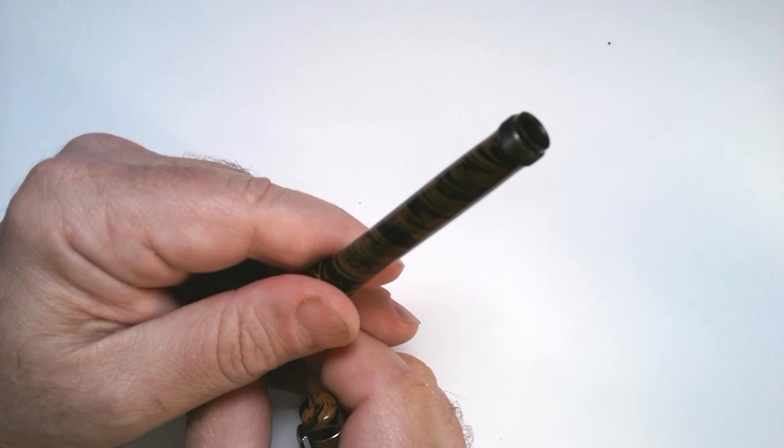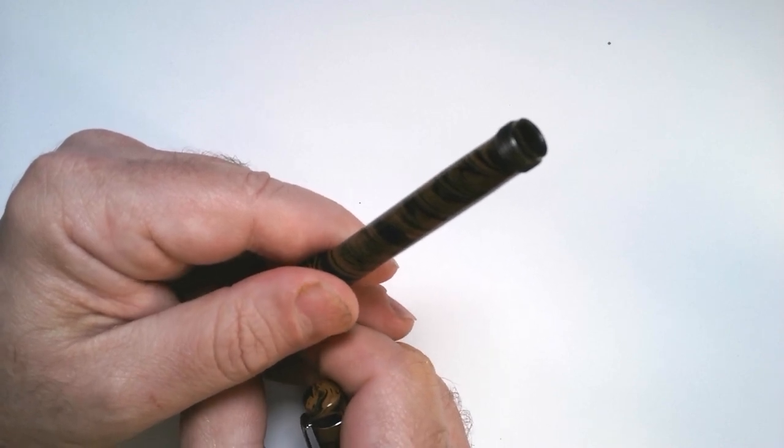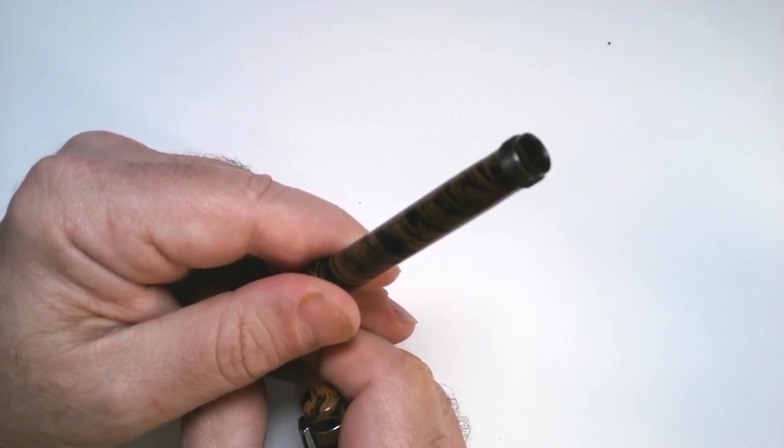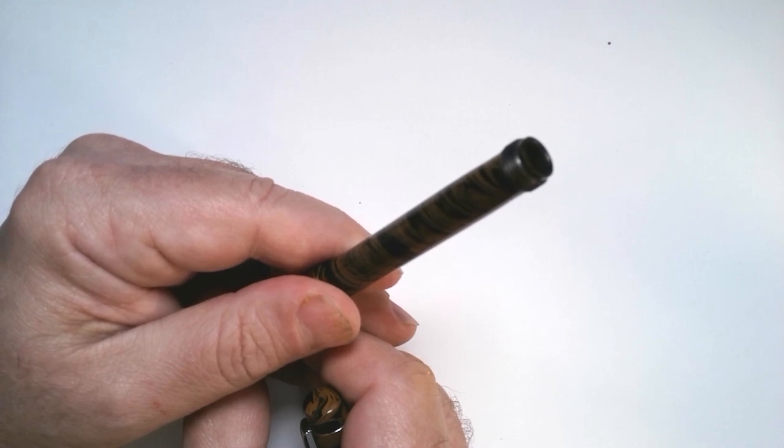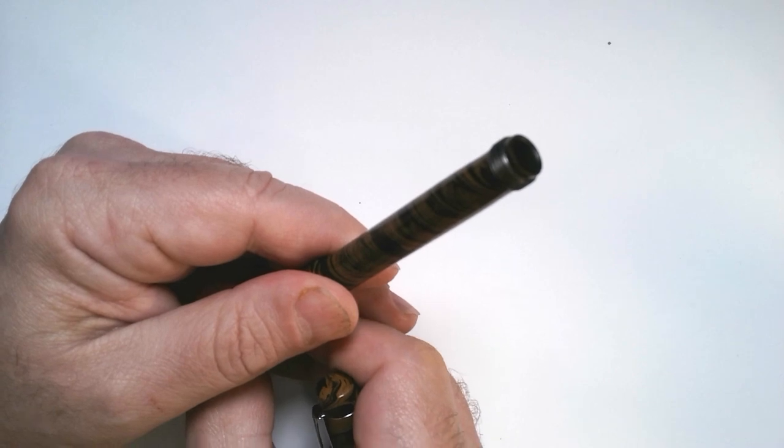And that makes sense because what would happen is I would use the eyedropper, I'd try to get the ink in it and it wouldn't take very much ink. And then when I push the nib up, that ink would get pushed out. So the barrel really wasn't filling.